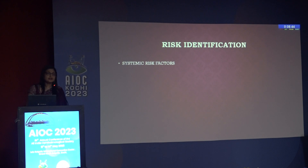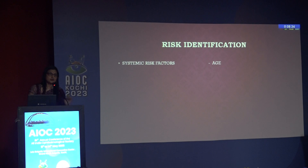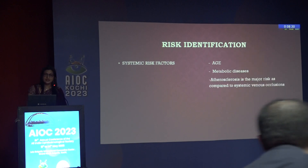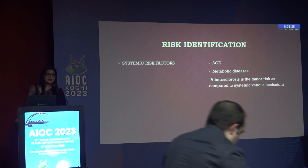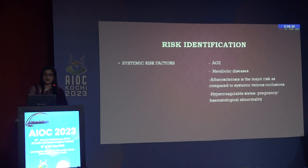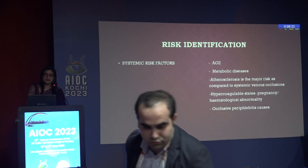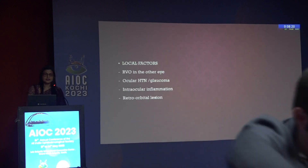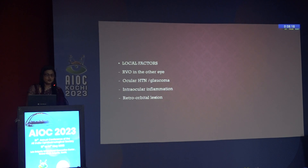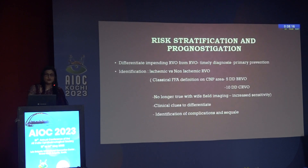The most important thing when you see a vein occlusion is risk identification. First look at the age of the patient; metabolic diseases, atherosclerosis, and hypertension are the major risk factors. For other causes, look at hypercoagulable states, occlusive periflebitis, local factors such as glaucoma, and any evidence of inflammation.